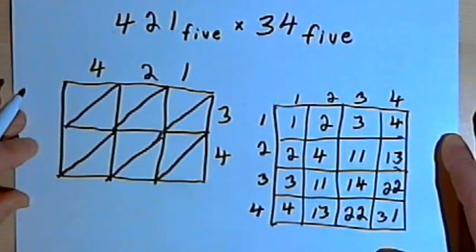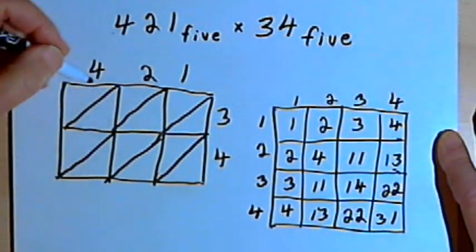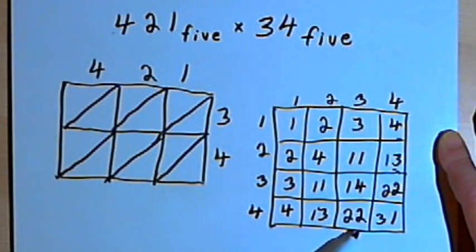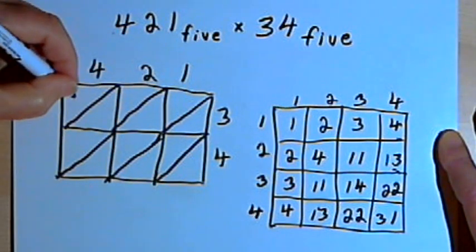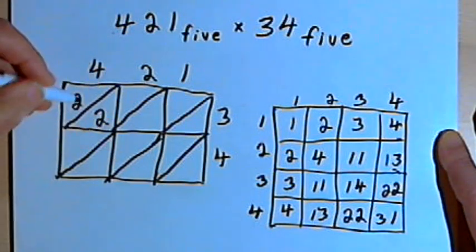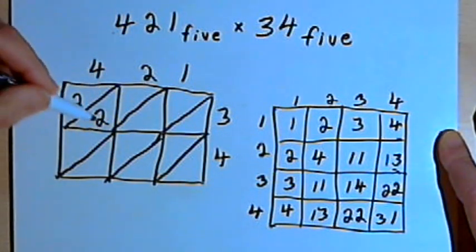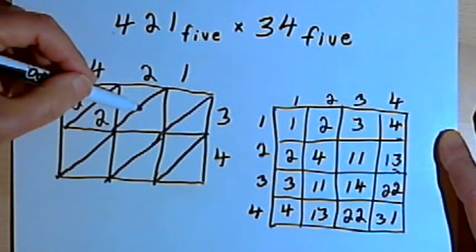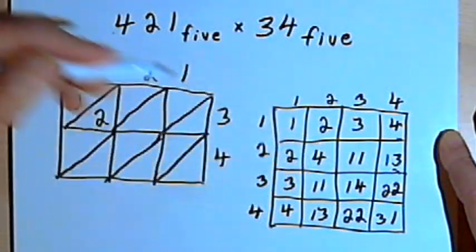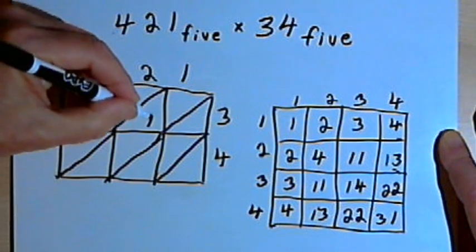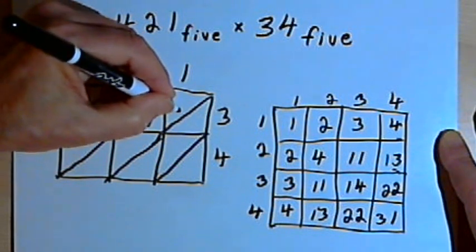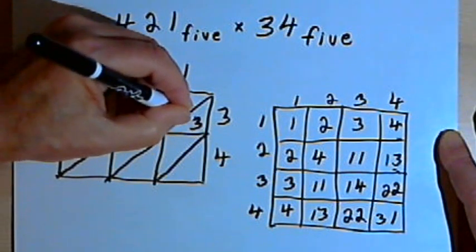And now I'll just add in my multiplication information. So I want 4 times 3. Going over to the table, I see that 4 times 3 is 22. So I'll put a 2 in each of those halves of the box. Then I want 2 times 3. So let's see, 2 times 3 is 11. And then I want 1 times 3. Well, I don't need the table for that. That's just going to be a 0 and a 3.